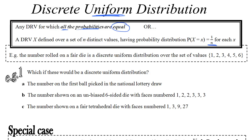Now hopefully you can see that rolling a fair die is an example of this. There are six different outcomes, all different, and they all have equal probability of 1 sixth.